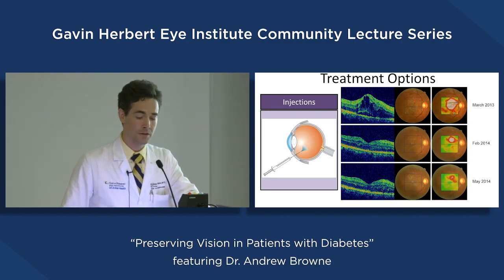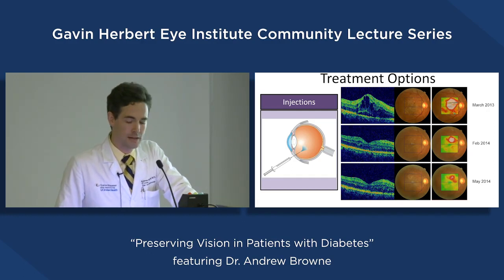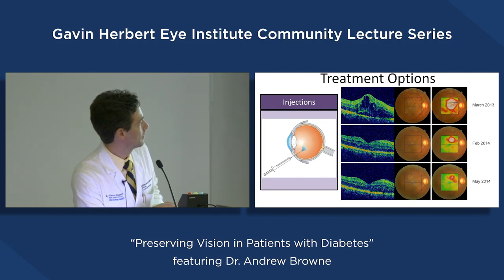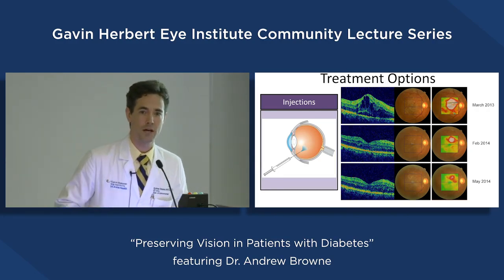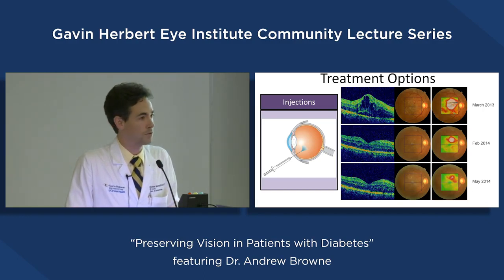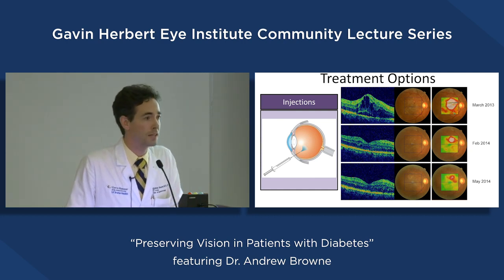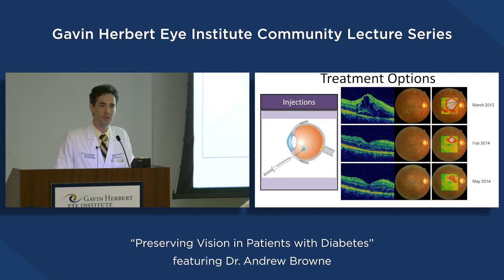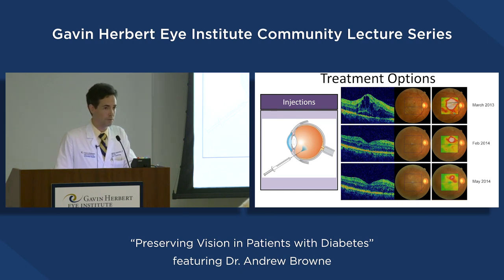Here's a patient I cared for starting in 2012 at USC who came in with severe non-proliferative diabetic retinopathy and a very swollen retina. Going from March 2013 to February 2014, we established essentially a normal foveal contour. Over a few more months, we normalized it further — this person had a restoration of vision, likely going from 20-400 to 20-40, a tenfold improvement in acuity. We can restore people's vision with injections and careful follow-up.